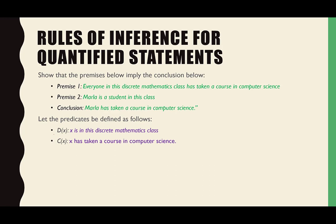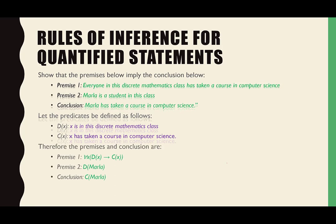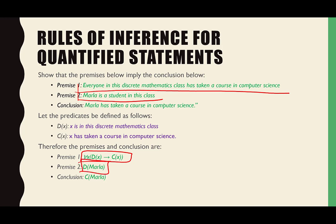D(x) is 'x is in this discrete math class,' C(x) is 'x is taking a course in computer science.' The first premise: for all x, if D(x) then C(x) — if that person is in the math class, therefore they've taken computer science. The second premise: D(Marla) is true, because Marla is sitting right there. These are our premises in mathematical terms, and I want to prove C(Marla).